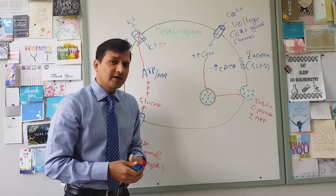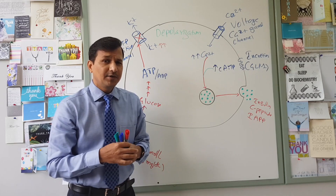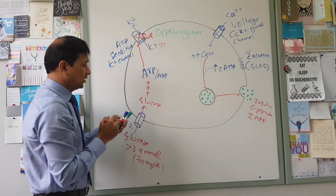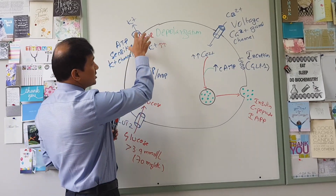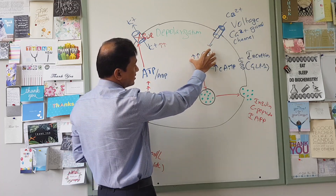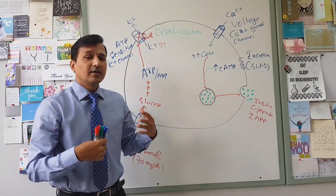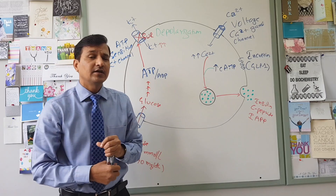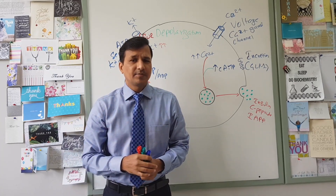Regarding sulfonylureas: sulfonylureas are a class of drugs used in the treatment of diabetes mellitus. Sulfonylurea binds to the sulfonylurea receptor on the potassium channel and closes it. When the potassium channel is closed, there is depolarization, calcium levels increase, and exocytosis of insulin, C-peptide, and IAPP occurs. That is why sulfonylureas act similarly to the glucose-mediated insulin release mechanism.